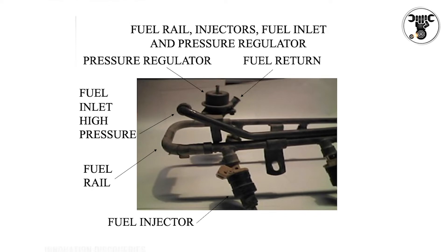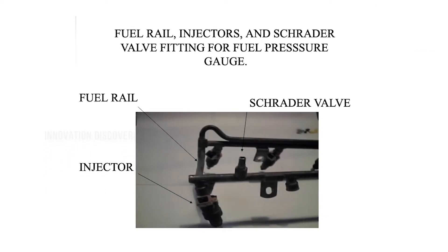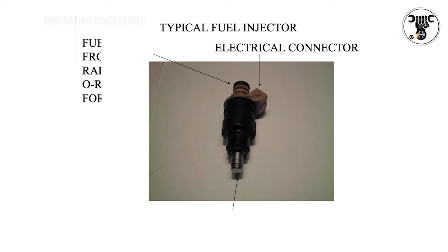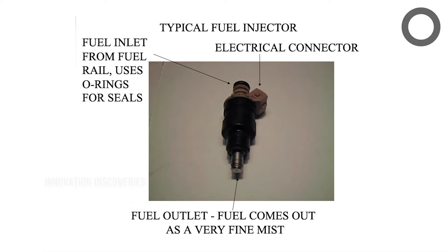The fuel rail includes a fuel inlet, pressure regulator, and fuel injectors. A Schrader valve fitting is provided for attaching a fuel pressure gauge. The typical fuel injector has a fuel inlet from the fuel rail, uses O-rings for seals, has an electrical connector, and the fuel outlet delivers fuel as a very fine mist.